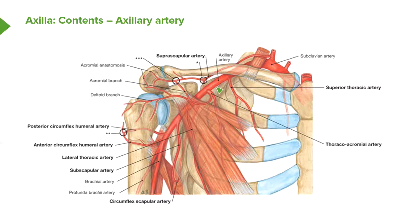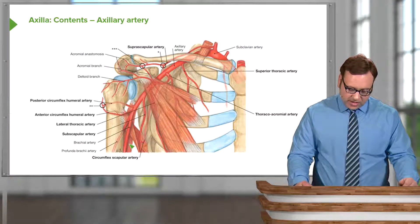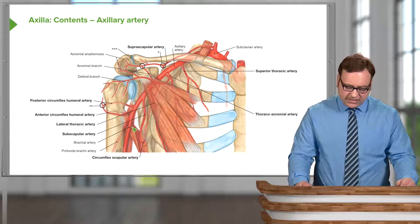The first part of the axillary artery is between the clavicle and the superior border of pectoralis minor. The second part is directly deep to pectoralis minor. The third part runs from the inferior boundary of pectoralis minor all the way down to the lower border of the axilla, where the axillary artery then becomes the brachial artery — typically at the inferior border of teres major.